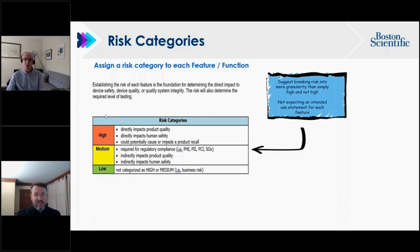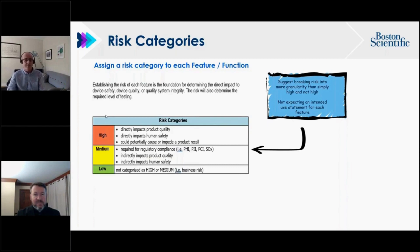The risk category assigned to each feature supports the determination of what type of testing will be conducted. Ray deliberately uses the word 'support' because critical thinking must be applied when deciding which validation techniques to use. Boston Scientific tries to avoid a one-size-fits-all approach.